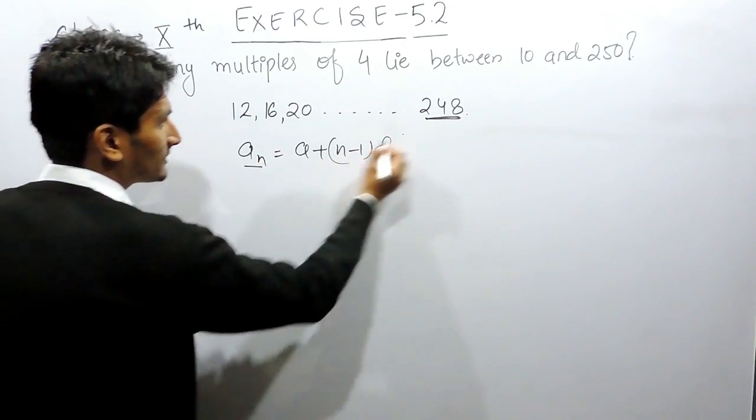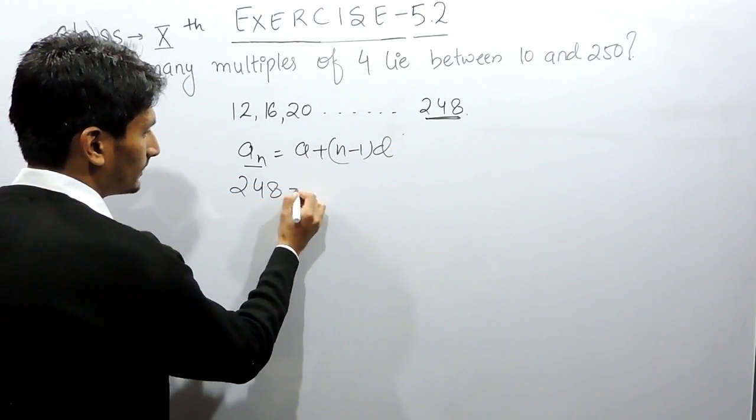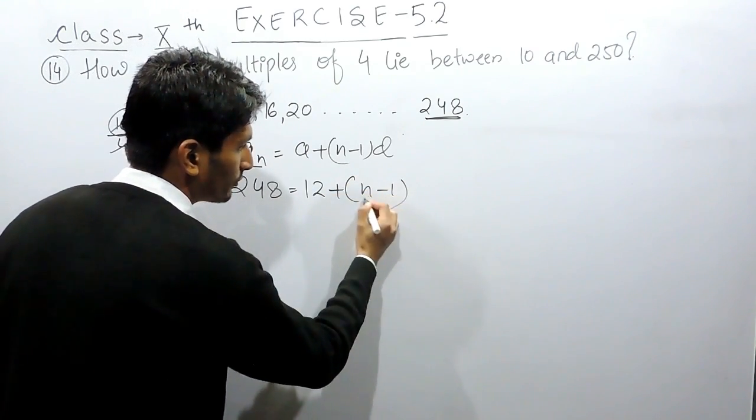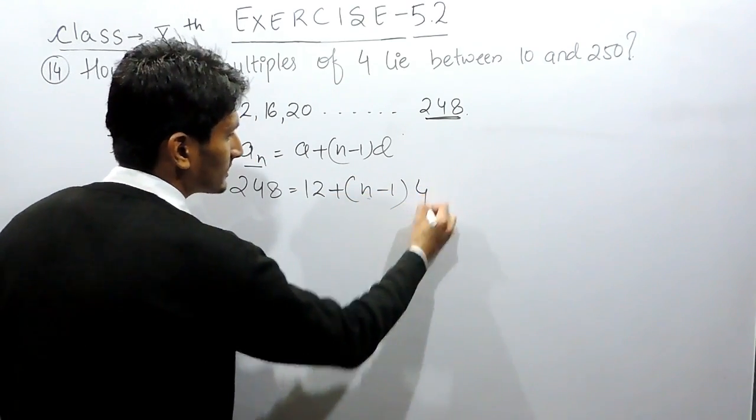The nth term is equal to A plus N minus 1 into D. And the nth term is given to you, 248. The first term is given to you as 12. And the number of terms you have to find out. And the common difference is 4.